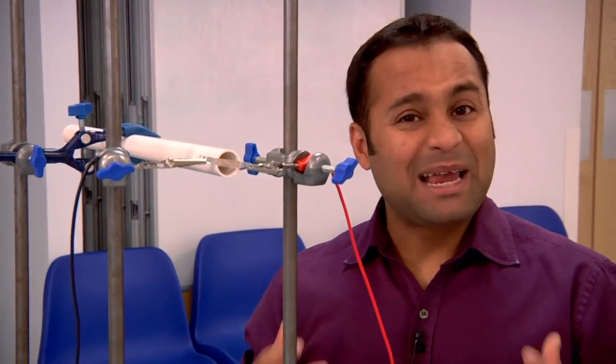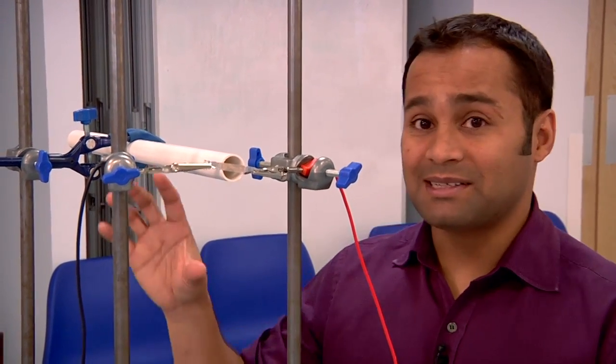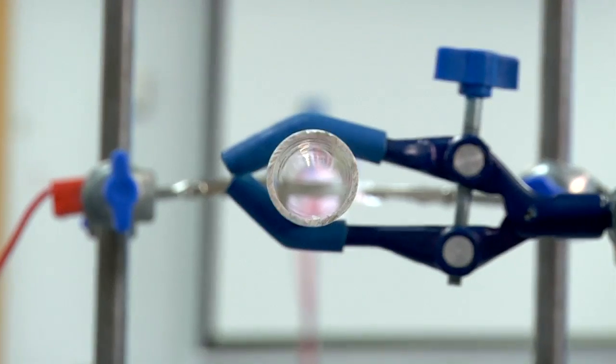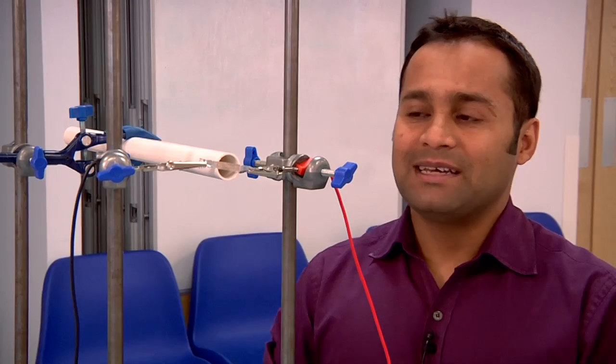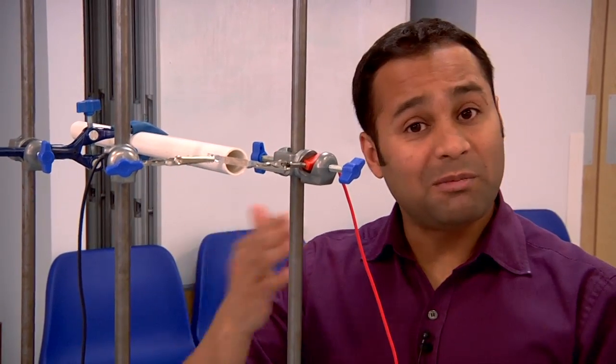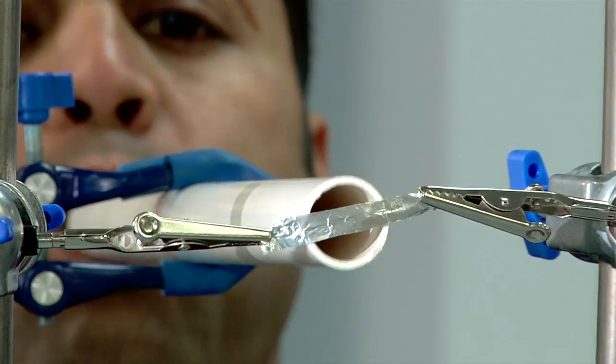Now believe it or not, it's not the aiming that's the problem here, because with this setup you just sight it down the tube. What I think I was doing wrong is that every time I used the tube, I was wobbling it slightly so that the aim was thrown off.